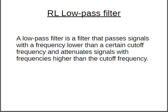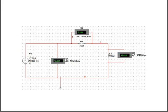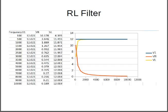RL low-pass filter. A low-pass filter is a filter that passes signals with a frequency lower than a certain cut-off frequency and attenuates signals with frequencies higher than the cut-off frequency. This is the circuit for the RL circuit, and these are the readings for the RL filter.